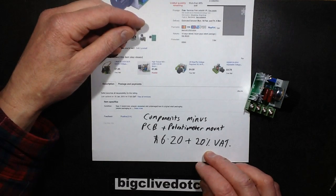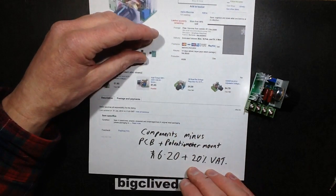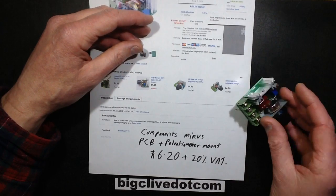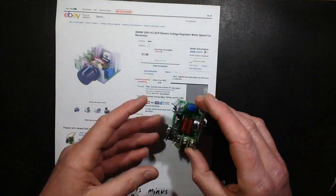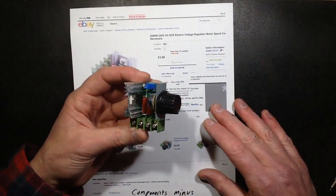So £1.68 versus £6.20 plus VAT for the fully built module versus the components. There are two components on this module that are just worthy of note.